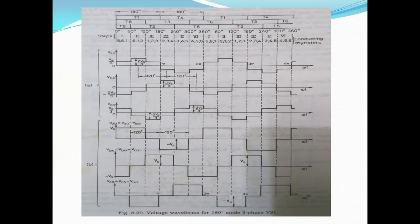This is the 180-degree mode of operation waveforms for the three-phase MOSFET bridge inverter. The upper group is 1, 3, 5 and the lower group is 4, 6, 2. It is called 180-degree mode because one power MOSFET or switching device conducts for 180 degrees, after which its complementary device in that leg conducts for the next 180 degrees. In leg one, switch 1 and switch 4 are triggered in a complementary manner.